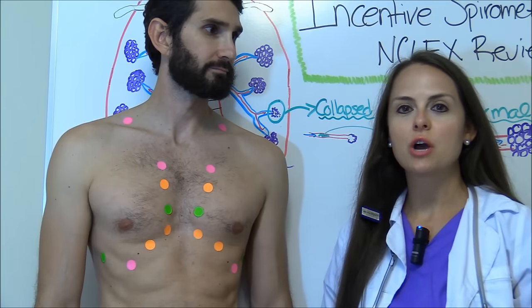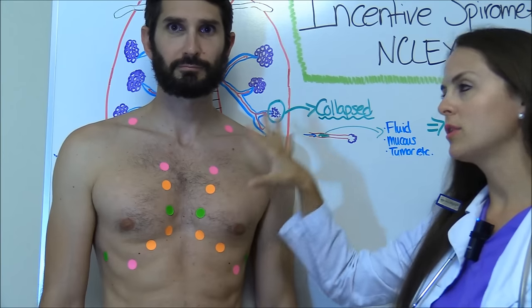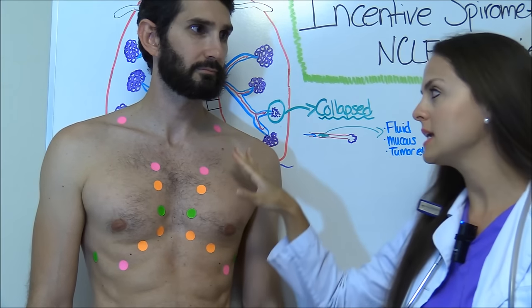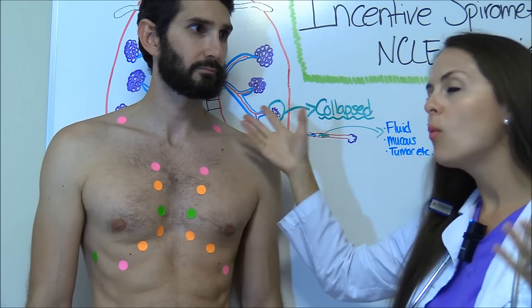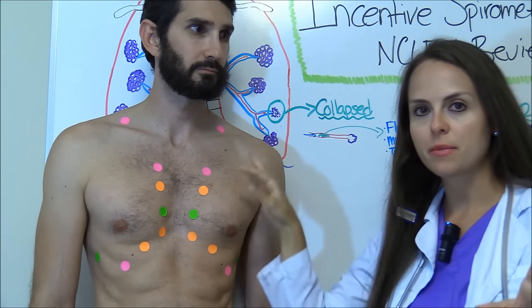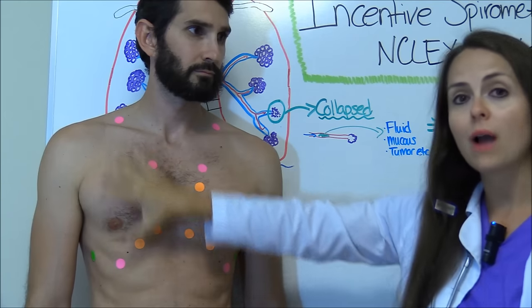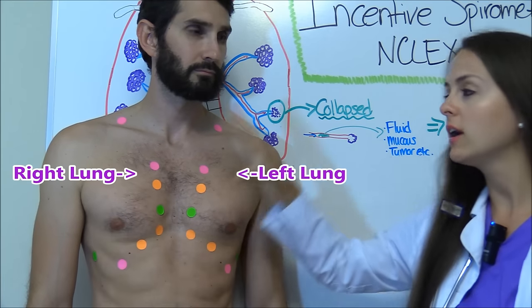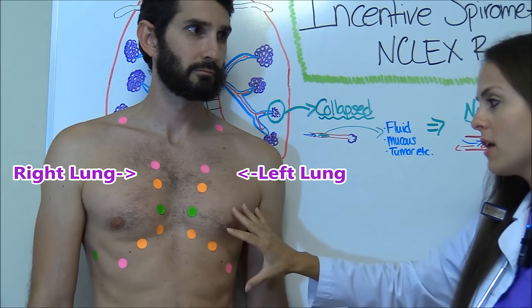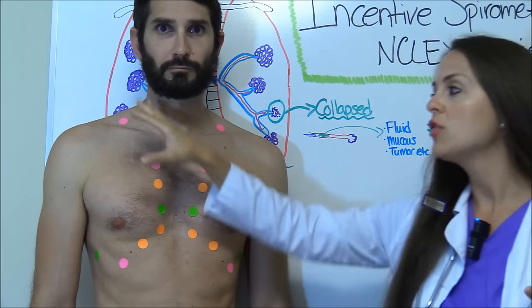First I want to start out showing you the auscultation sites. I wanted to use these stickers so you can see about where I'm going to go with the stethoscope. And let me go over these real fast for you because these are the little landmarks of where you're going. We have our right lung over here and our left lung over here, and what we're doing is we're assessing the lungs.